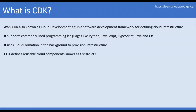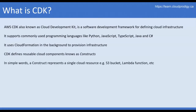CDK defines reusable cloud components which are known as constructs. When we work on a CDK project, we will see how to configure these constructs. A construct basically represents a single cloud resource, which means if we want to create an S3 bucket, there is a construct for that. In this course, we will work on defining VPC and S3 constructs.